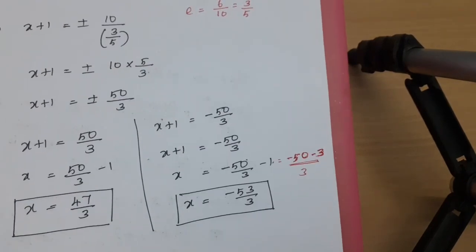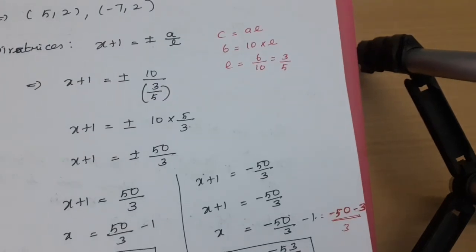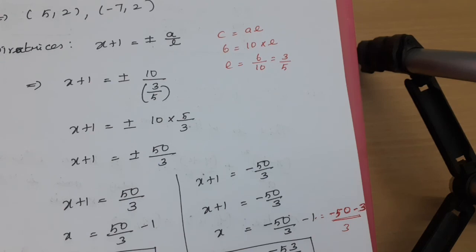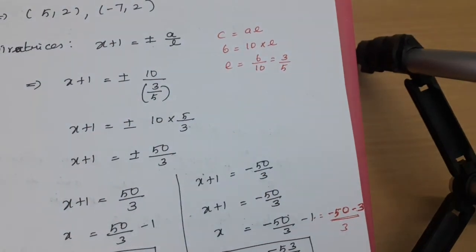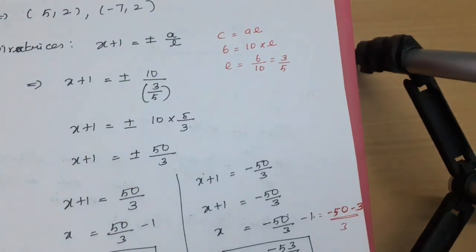Remember: if the major axis is along X axis, add or subtract the a and c values to h (the X component) for vertices and foci. If along Y axis, add or subtract to k (the Y component). For directrices, use x minus h equals plus or minus a/e for X axis, and y minus k equals plus or minus a/e for Y axis.